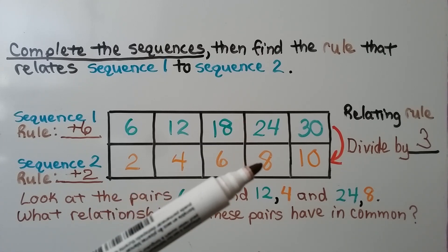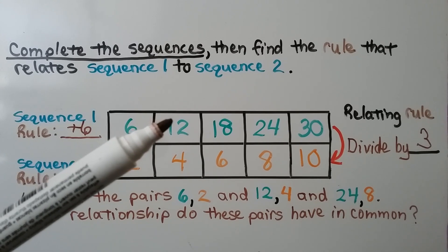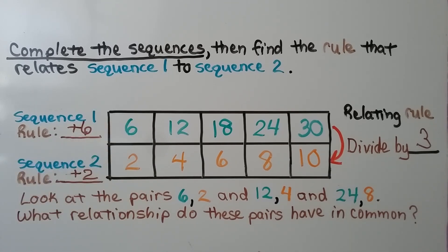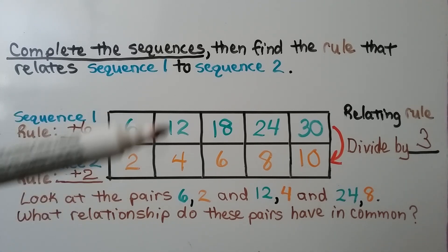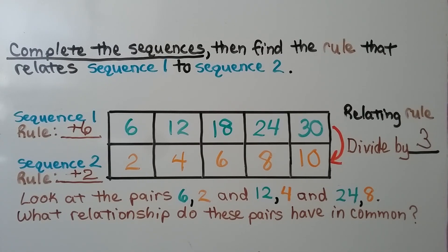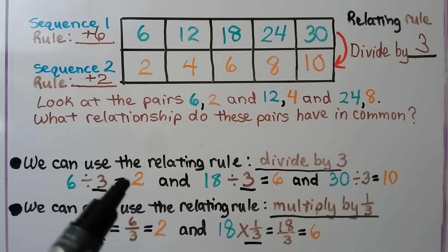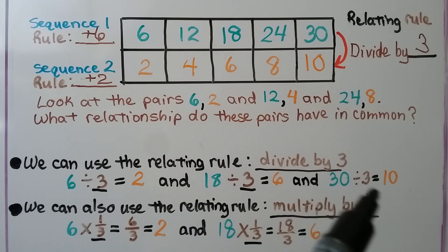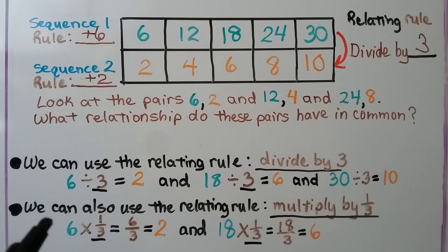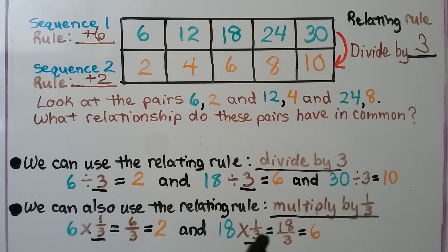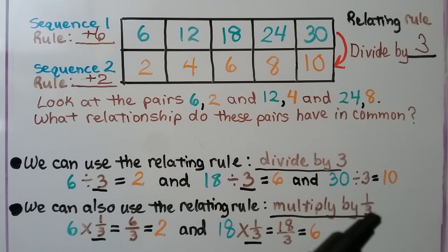We check the other terms: 24 divided by 3 is 8, 18 divided by 3 is 6, 12 divided by 3 is 4, and 6 divided by 3 is 2. We look at all the pairs — (6,2), (12,4) — and see the relationship they share. The relating rule is divide by 3. But we can also use the relating rule multiply by 1 third: 6 times 1 third equals 6 thirds, which simplifies to 2. So we could use either divide by 3 or multiply by 1 third.